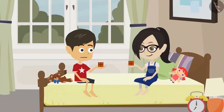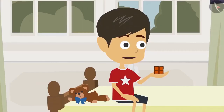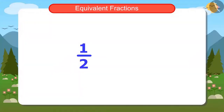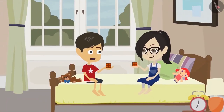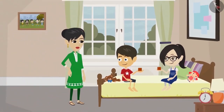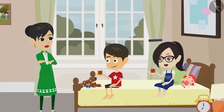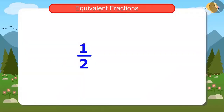Hey, there is nothing left for mummy! I understood that auntie knew that there would be four pieces of chocolate in both one half and two fourths for us to eat. So she asked us to distribute the chocolate like this. That means one half and two fourths are equal! I understood, mummy — one half and two fourths are equal.